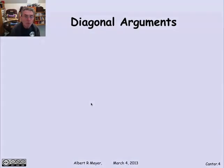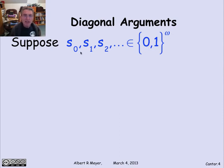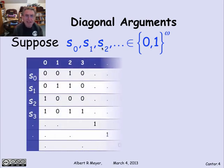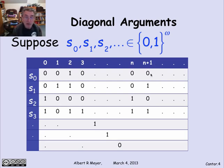The setup for using a diagonal argument is to think about drawing a matrix. Suppose that I have some way of enumerating the infinite binary sequences in {0,1}^ω. So there's a sequence S0, S1, S2. Let's lay them out as though they were the rows of a matrix. So S0 is this infinite binary sequence: 0, 0, 1, 0, and so on. The column labels are simply the coordinate labels for S0 — so this is S0,0 then S0,1 and so on.